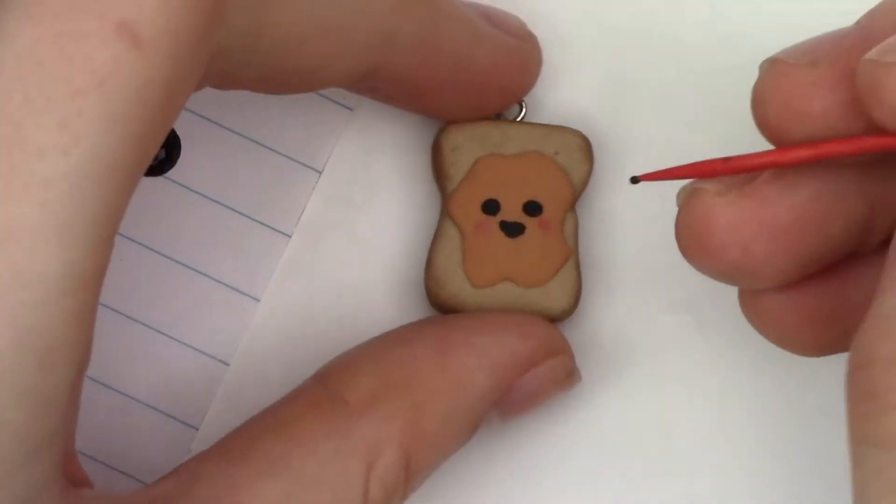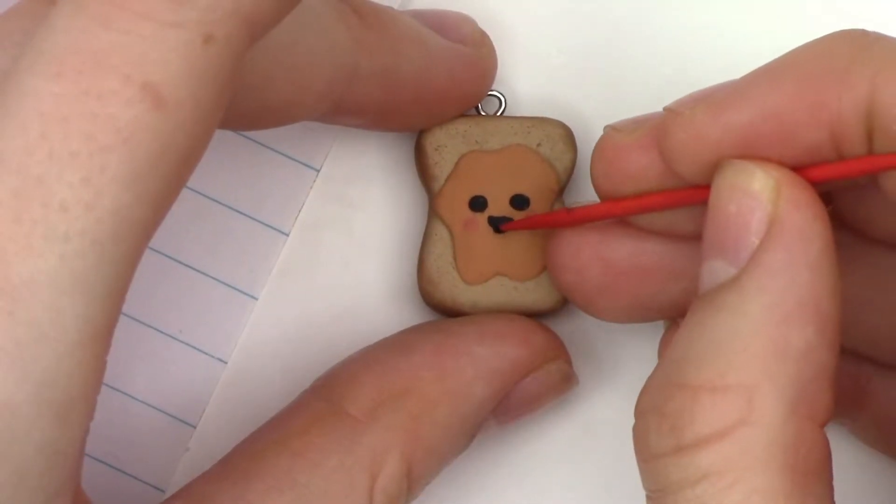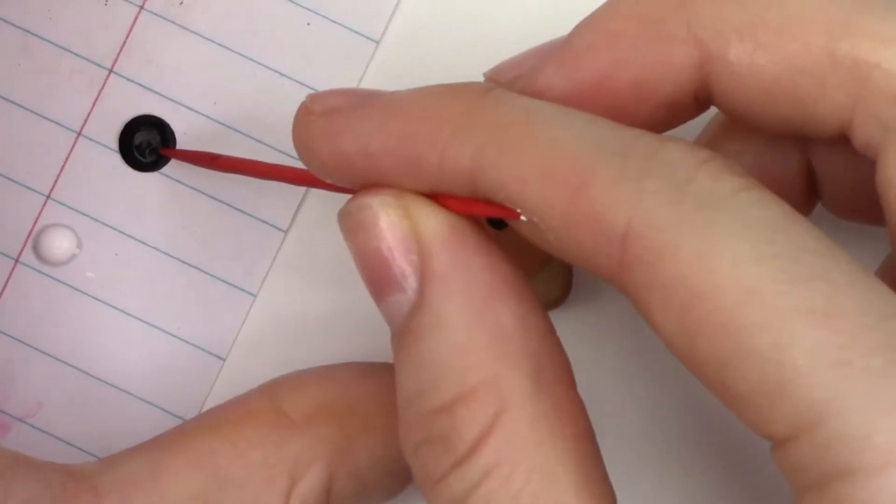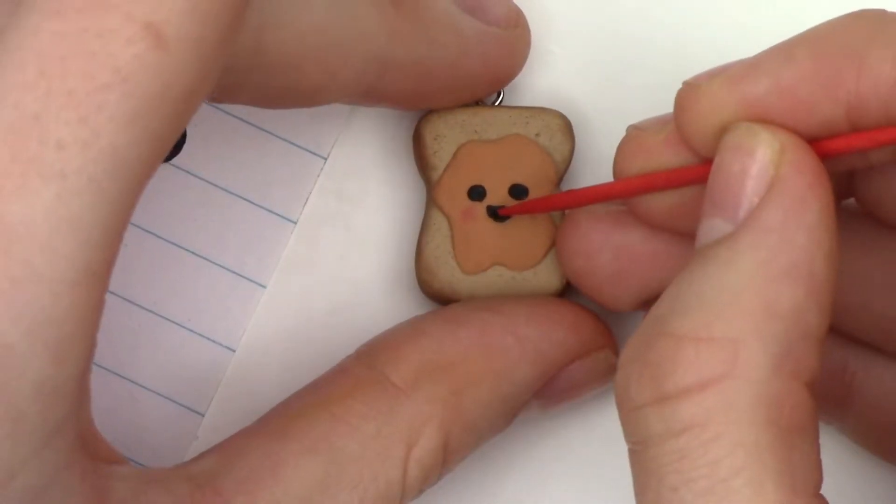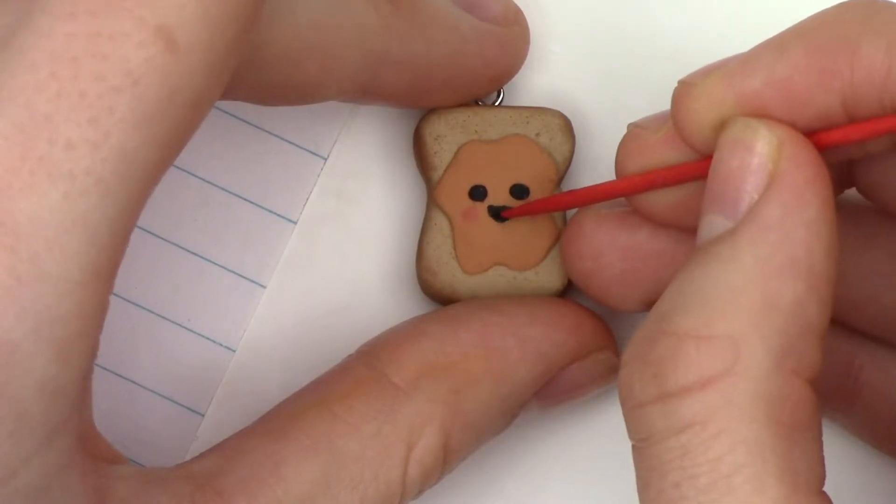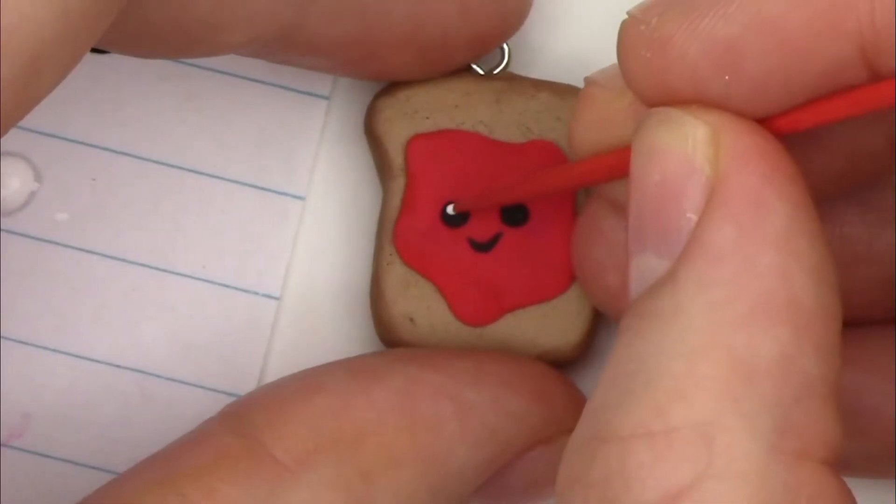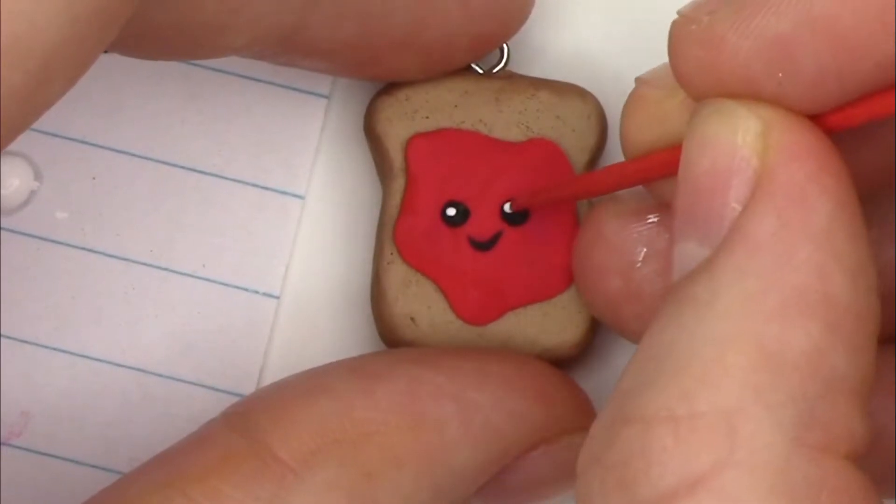And for my other charm, I did put on a clay smile, but for this one I decided to paint on a smile. It doesn't really matter. You can do it either way. I'm just using acrylic paint. And now I'm just going in for the finishing touches on the eyes.